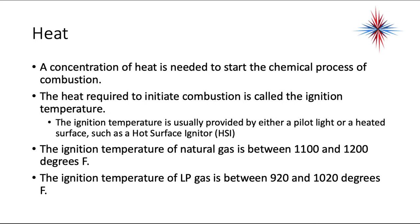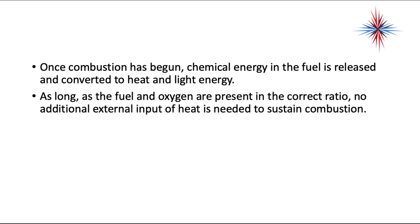A concentration of heat is needed to start the chemical process of combustion. The heat required to initiate combustion is called the ignition temperature, usually provided by a pilot light, a heated surface such as a hot surface igniter, or spark ignition. The ignition temperature of natural gas is between 1,100 and 1,200 degrees Fahrenheit. The ignition temperature of LP gas is between 920 and 1,020 degrees Fahrenheit. Once combustion has begun, chemical energy in the fuel is released and converted to heat and light energy. As long as fuel and oxygen are present in the correct ratio, no additional external heat input is needed to sustain combustion.